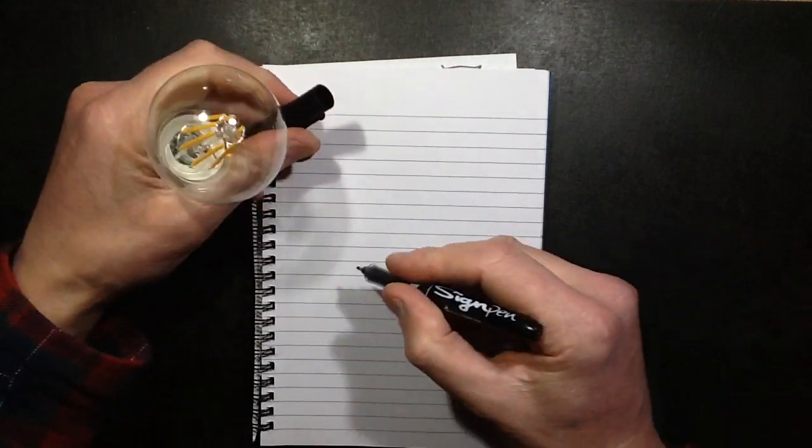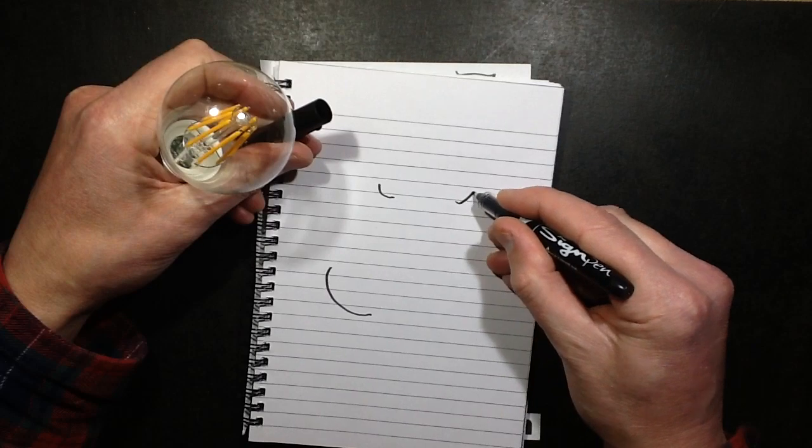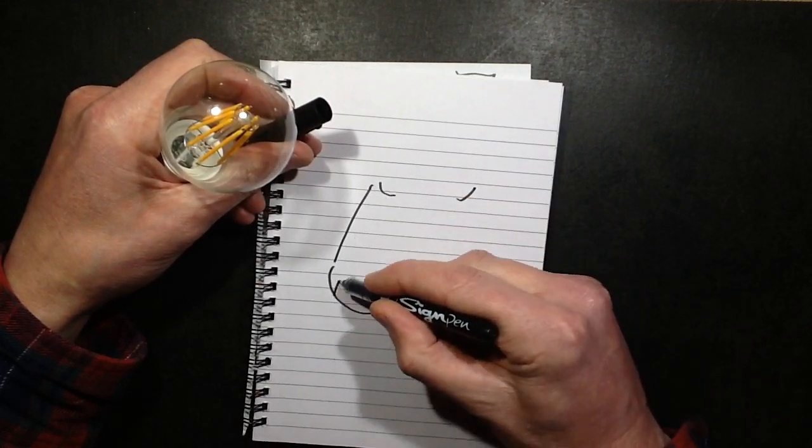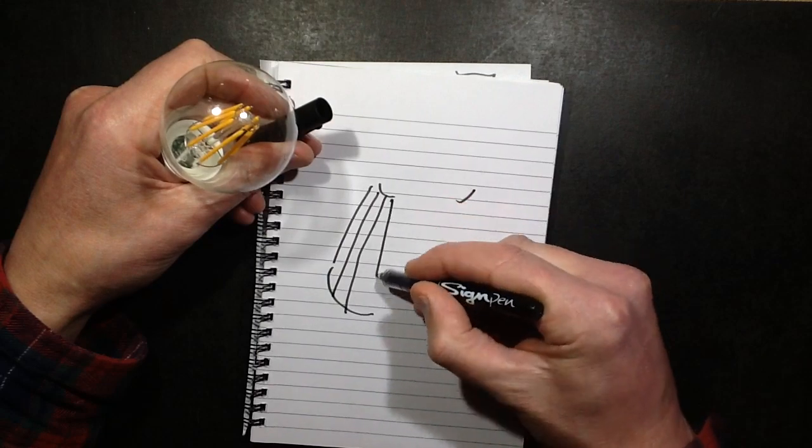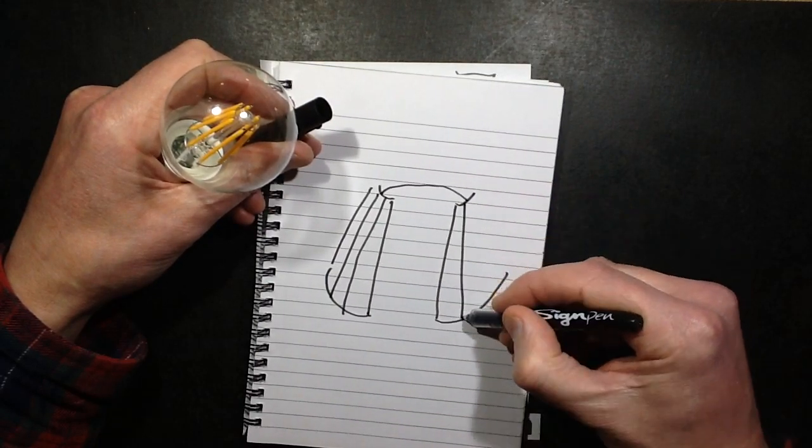The way the LEDs are arranged inside, they've got a common bus at the top and bottom, and they've got one filament, two, three, four in parallel, then bridged across, and then they've got four coming back down again.